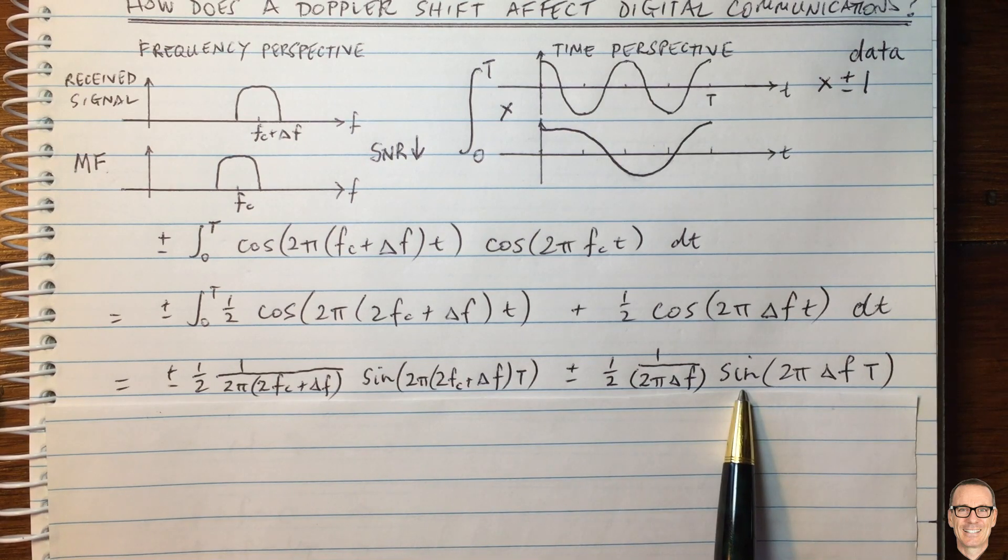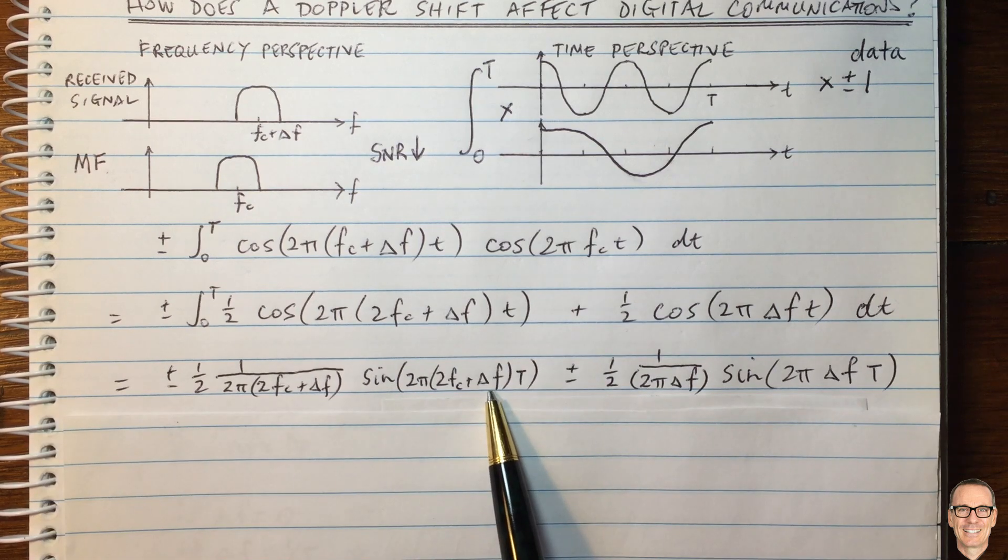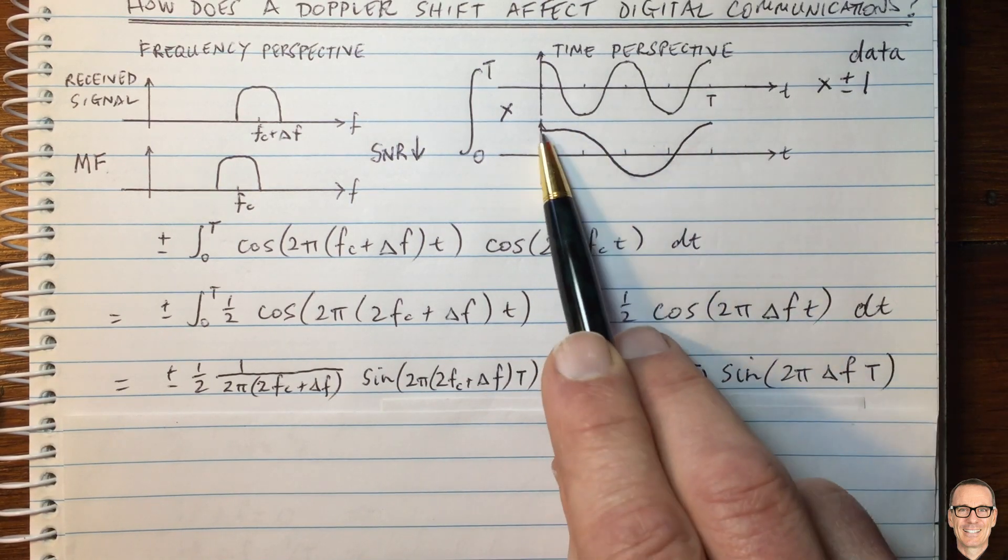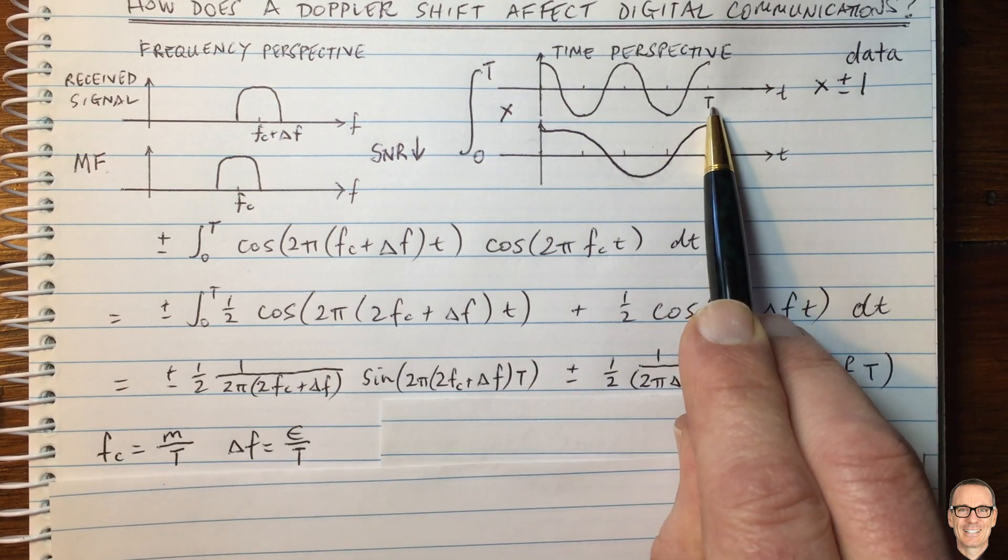Now, let's simplify these expressions by looking at some typical values for Fc and delta F. Now, the carrier waveform is typically designed such that it goes through an integer number of cycles across the time period capital T.